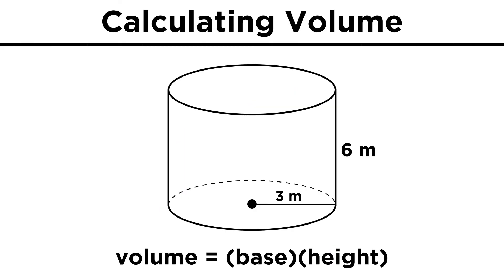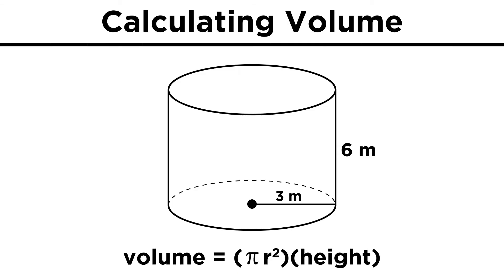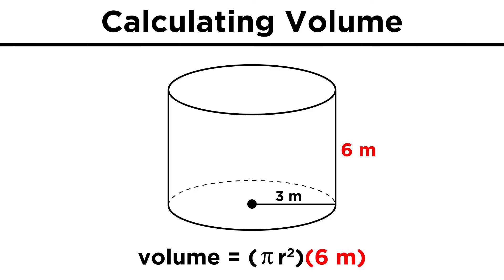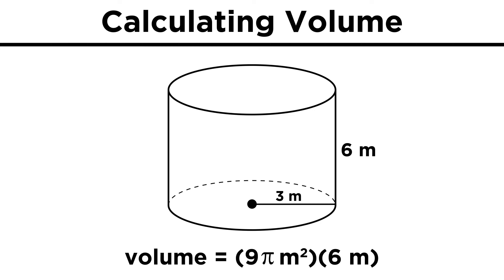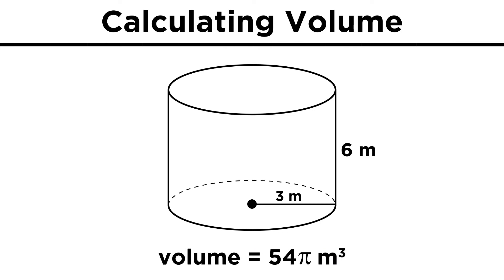This works for cylinders too — it's always just base times height. The base of a cylinder is a circle, so we find the area of this circle and then multiply by the height of the cylinder. If the height is six meters and the radius is three, we get pi r squared, or nine pi times six, or fifty-four pi cubic meters.